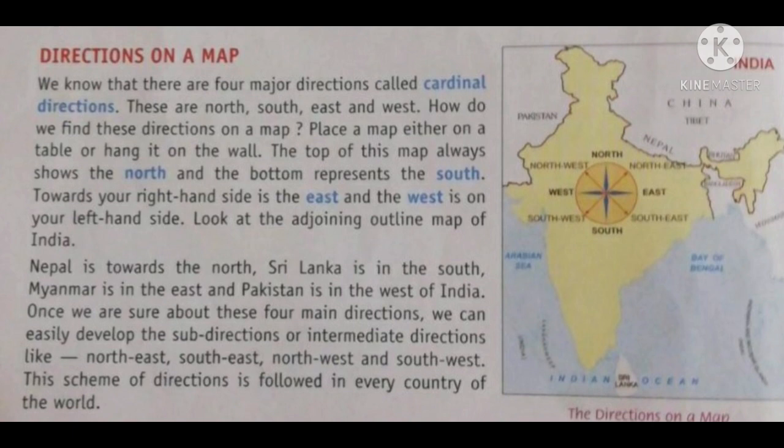Look at the adjoining outline map of India. Nepal is towards the North, Sri Lanka is in the South, Myanmar is in the East and Pakistan is in the West of India.